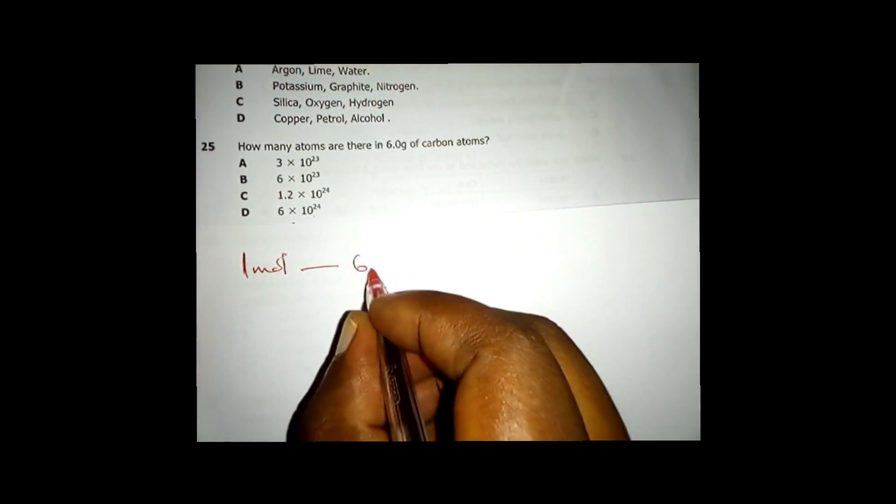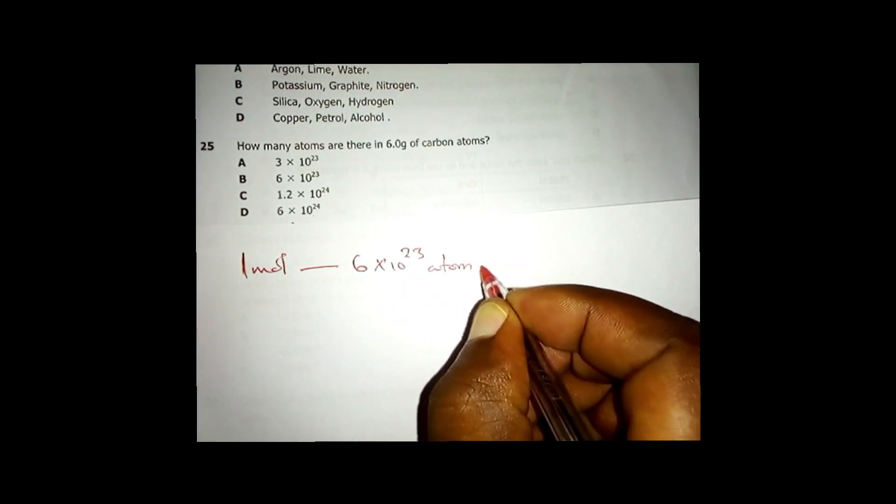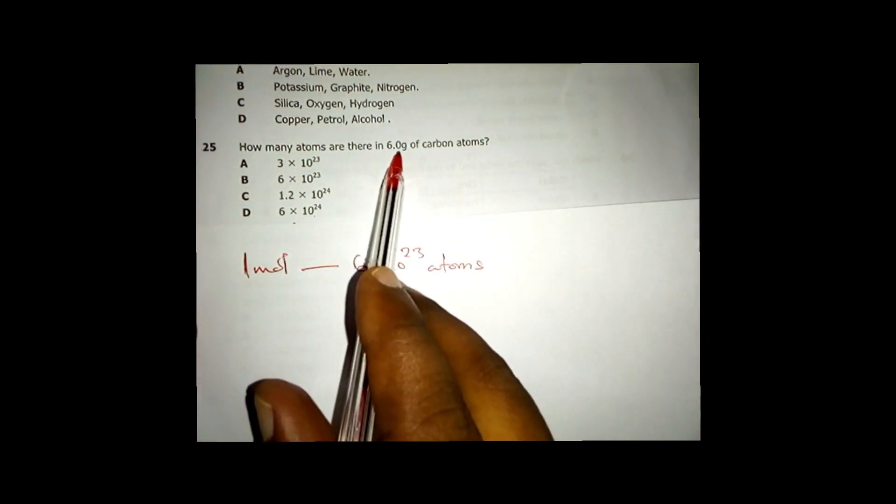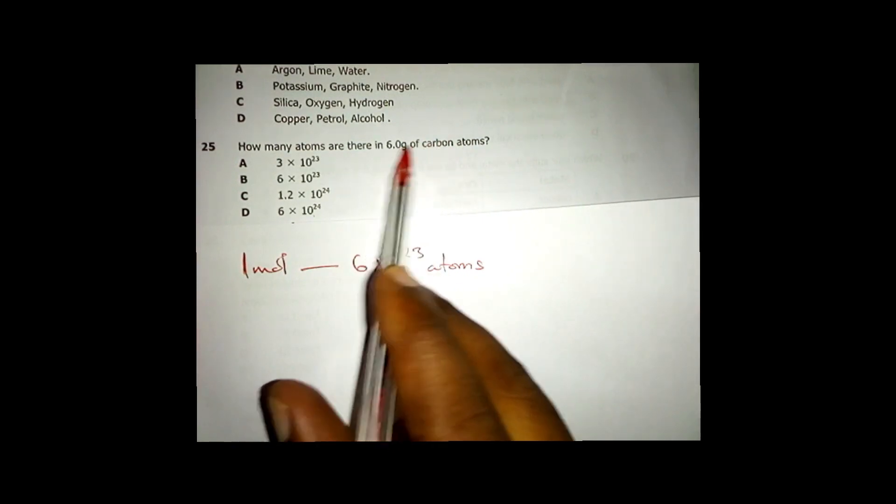This is coming from the mole concept. First of all, they are asking how many atoms. Whenever they are talking about atoms, you must know that one mole will always give you 6×10²³ atoms. So in one mole, those are the atoms which are there.